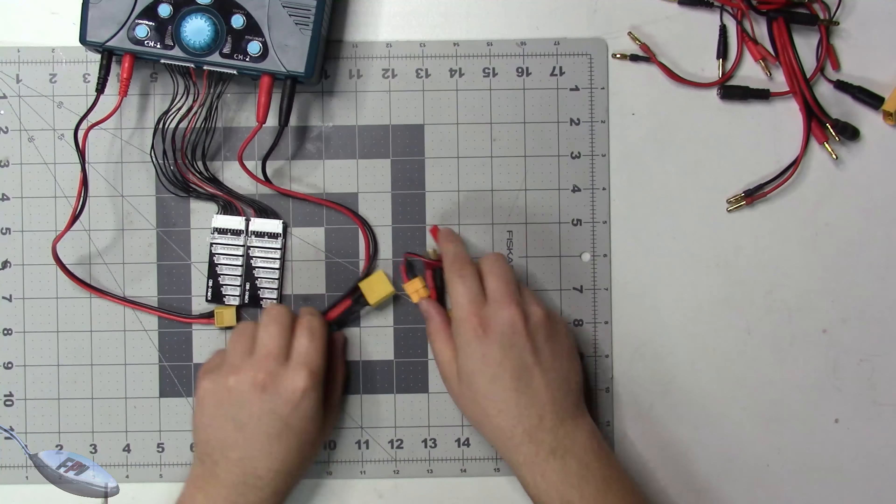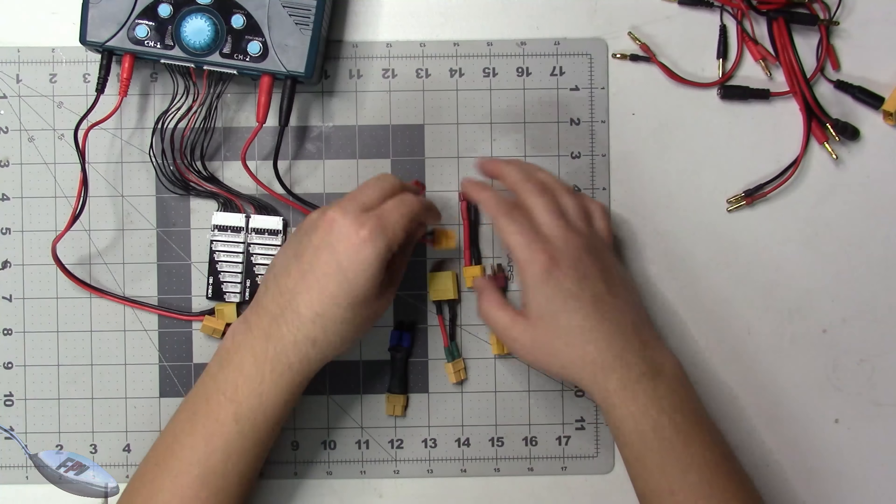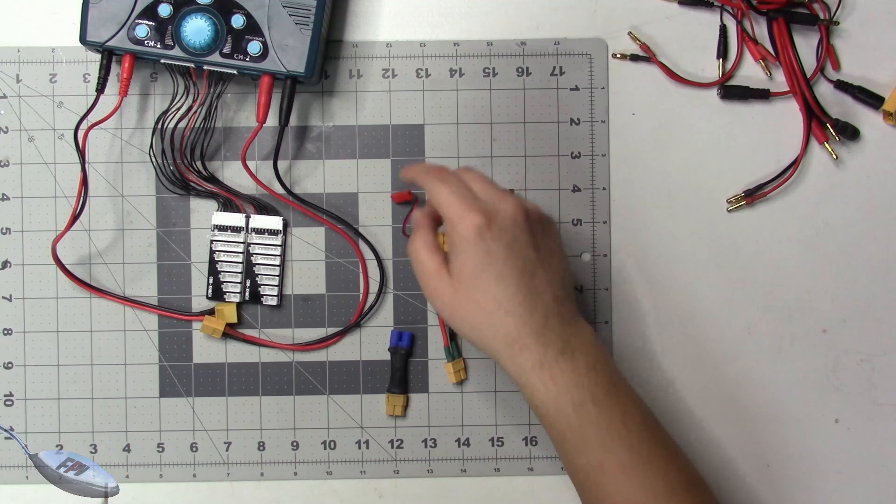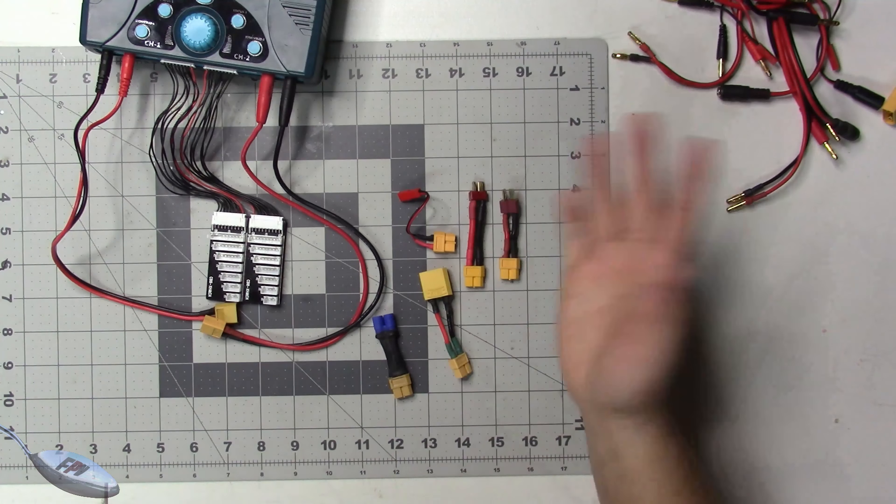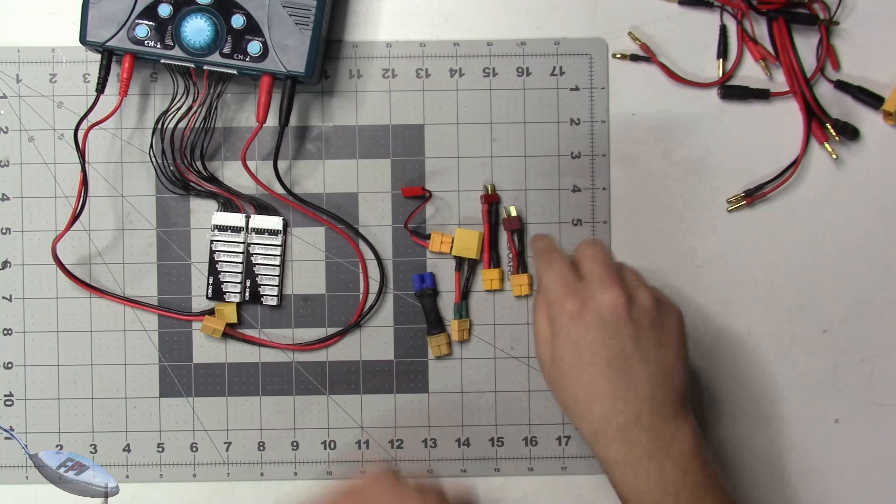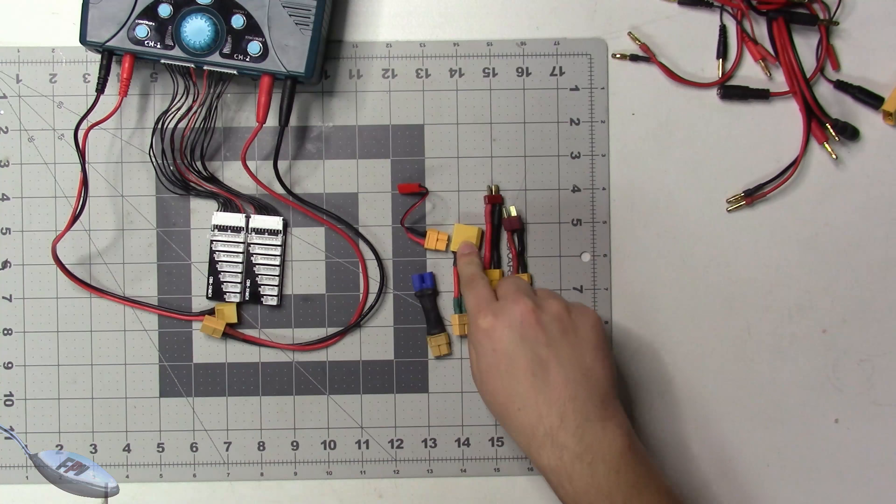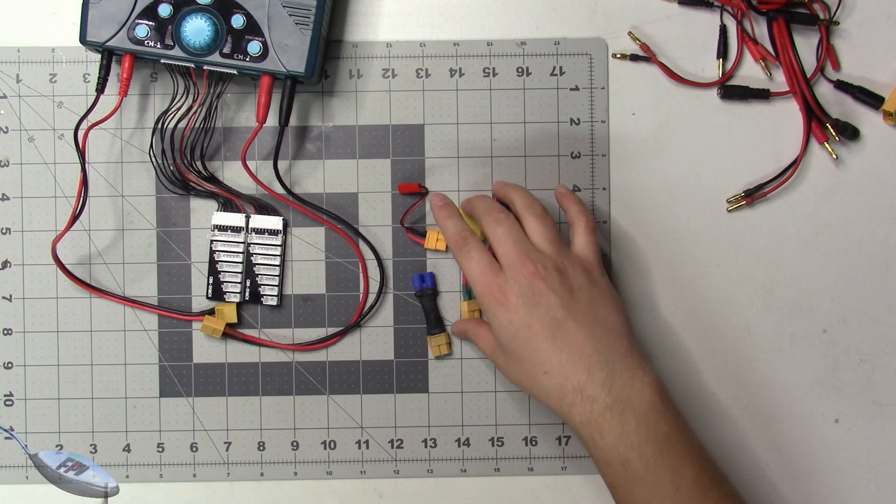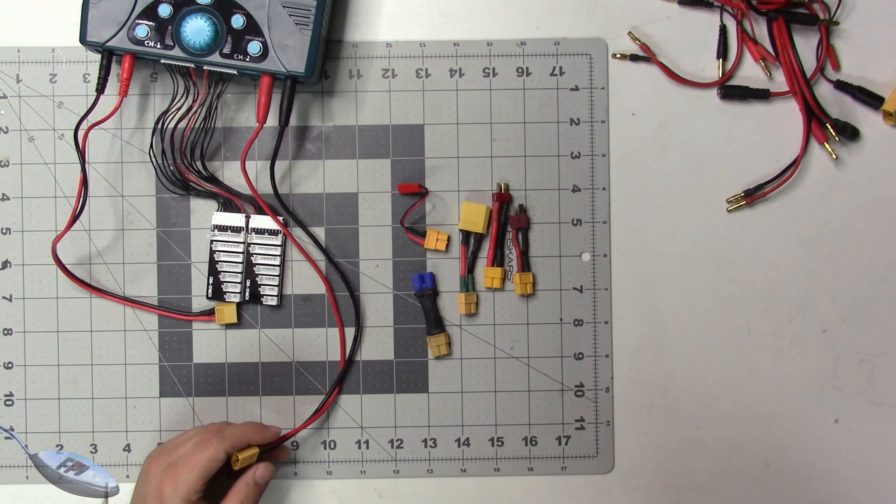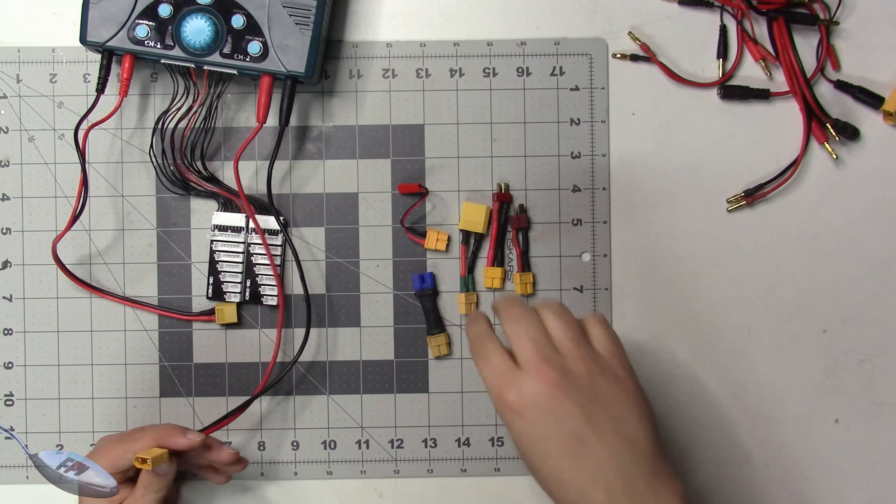This takes up a lot less space than those other cables. You can charge your JST, your XT90, whatever it is that you have in your stock by just having these style connectors and these little adapters without ever having to remove the cables.